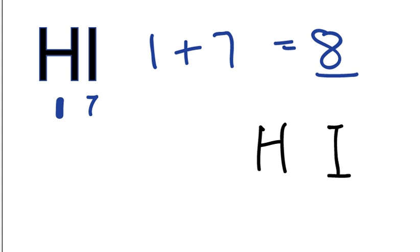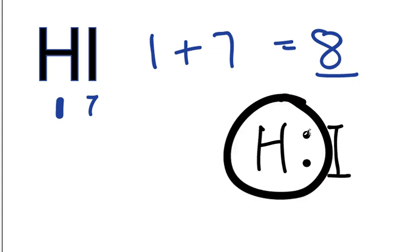So we have 8 valence electrons. Let's put 2 here to bond the hydrogen and the iodine atoms, and that fulfills the octet, really the duet, of hydrogen. Hydrogen only needs 2 to have a full outer shell.